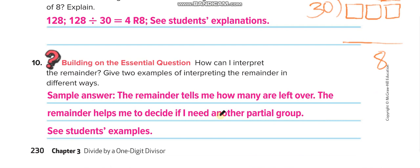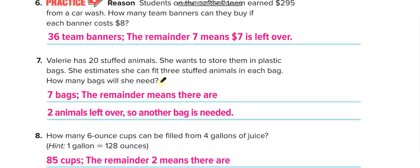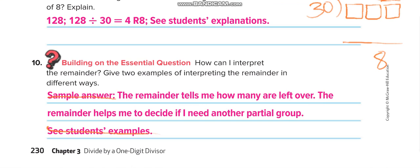How can I interpret the remainder? Give two examples of interpreting the remainder in different ways. So the remainder tells me how many are left over. The remainder helps me to decide if I need another partial group or no. Like if I need to add one more, like here we added one back, and here we don't add. So the remainder tells us this.